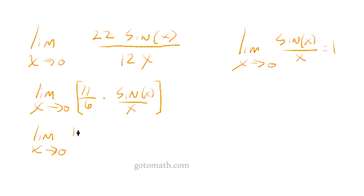And we'll have 11 over 6 times the limit as x approaches 0 of sine x over x. Now the limit of a constant is just the constant. So we have 11 over 6 times. And we know what the limit of this is, right? This is 1, so therefore it's equal to 11 over 6.